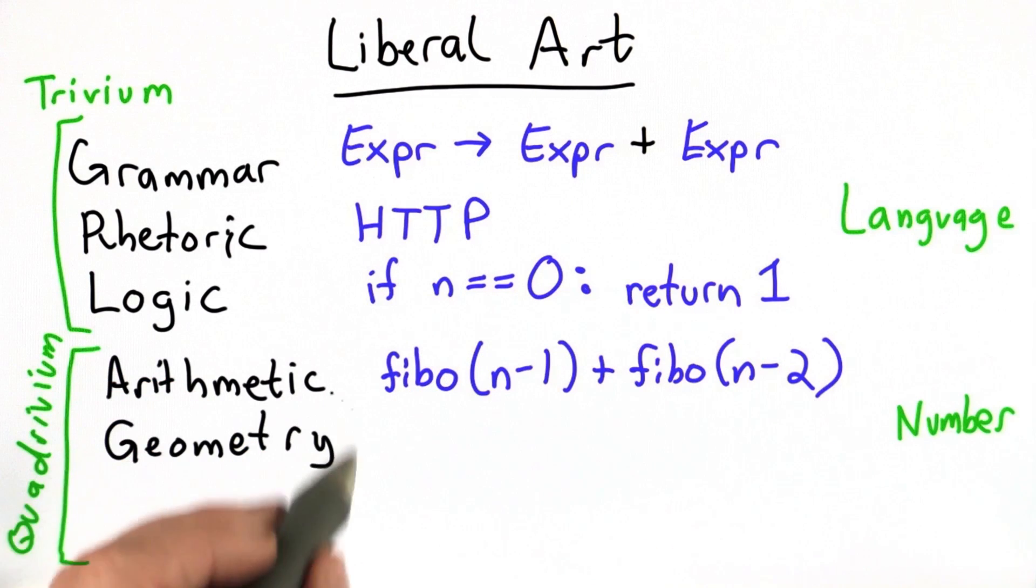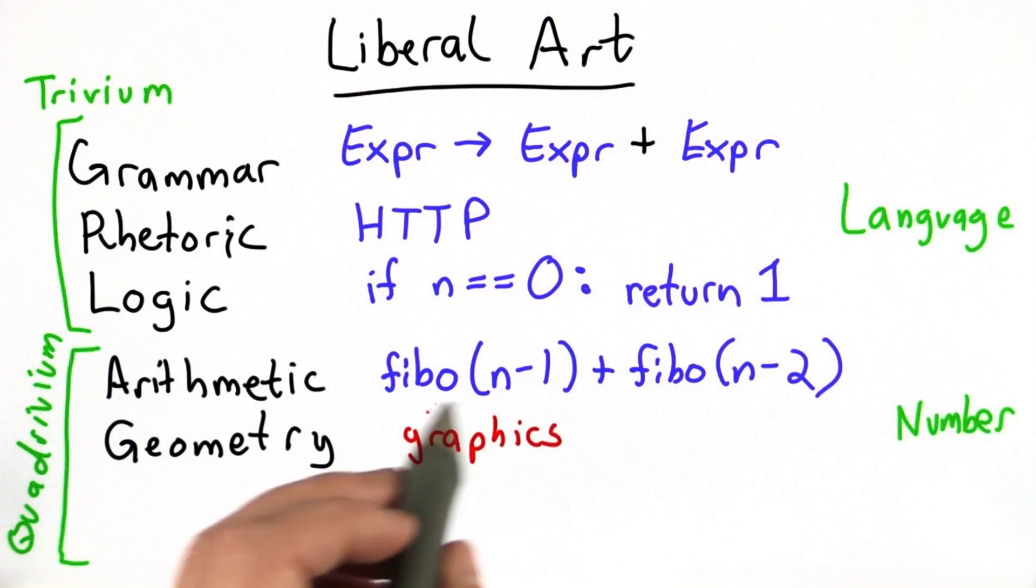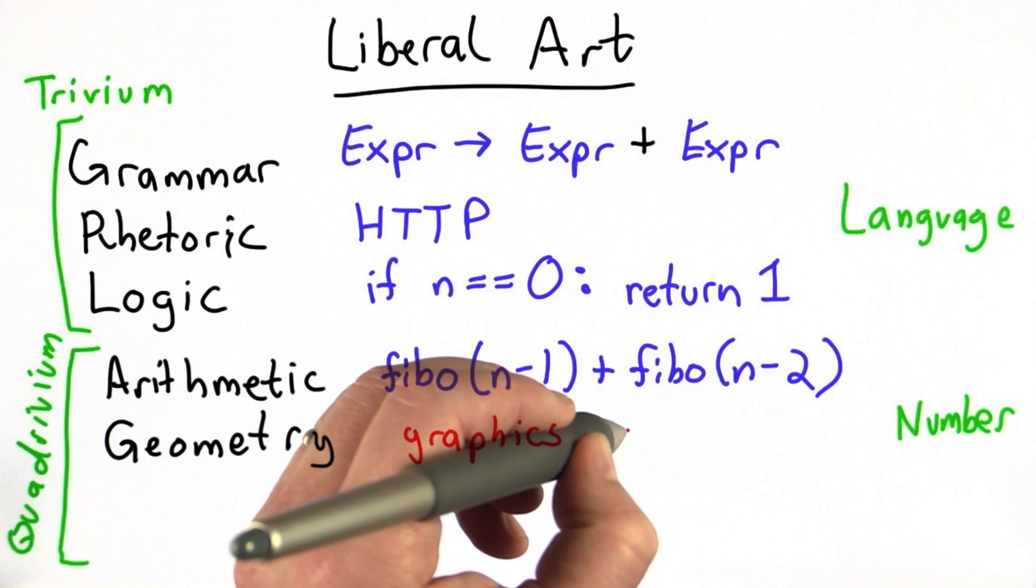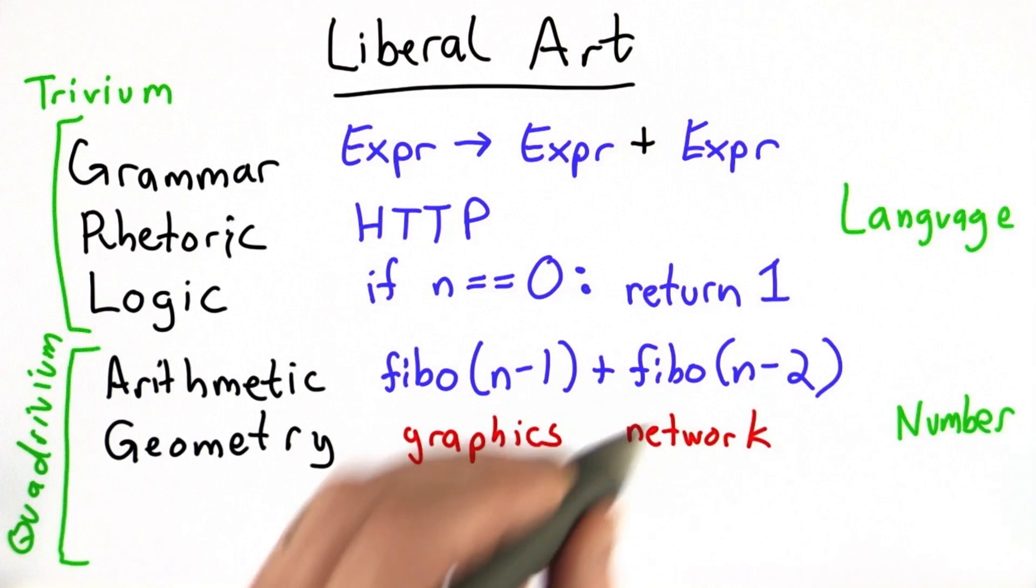Geometry, we haven't used too much directly in this class. There certainly is lots of use of geometry in computing. The two that I'll mention most in computer graphics, that's all about understanding the geometry of light well enough to be able to simulate images and to be able to draw things on the screen. The other place where geometry comes up a lot is in networking. And we saw that a little bit in Unit 4. If we want to design a network, we care about the topology of the network, how things are connected, and that depends on understanding geometry.